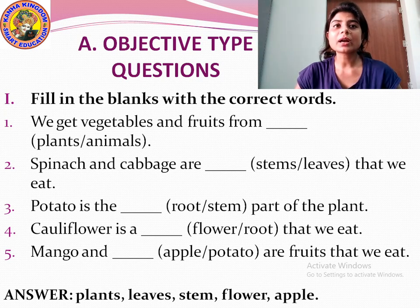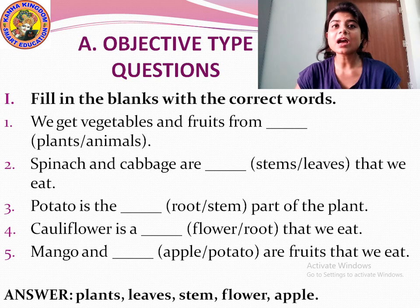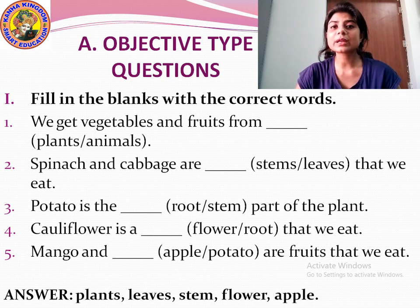Question number four: Cauliflower is a dash that we eat — flower or root. The answer is flower. Cauliflower is a flower that we eat.